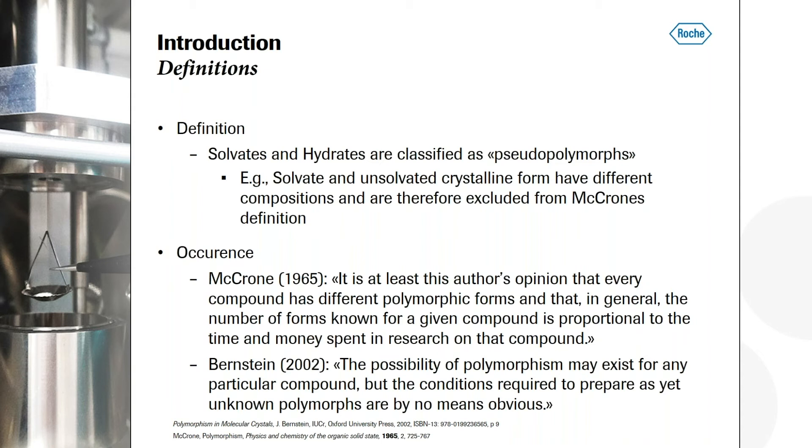And then also we have a quote from Joel Bernstein, who says the possibility of polymorphism may exist for any particular compound, but the conditions required to prepare as yet unknown polymorphs are by no means obvious. And this means, in principle, it fits to the McCrone statement, you need some time and you will find something, but it's not obvious that you will find, you don't have a recipe how to get it.